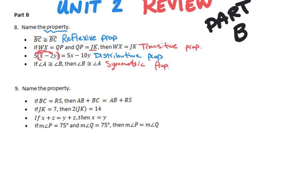Next question, same deal — name that property. BC equals RS, and it goes to saying AB plus BC equals AB plus RS. They added AB to both sides, so that's our addition property of equality.